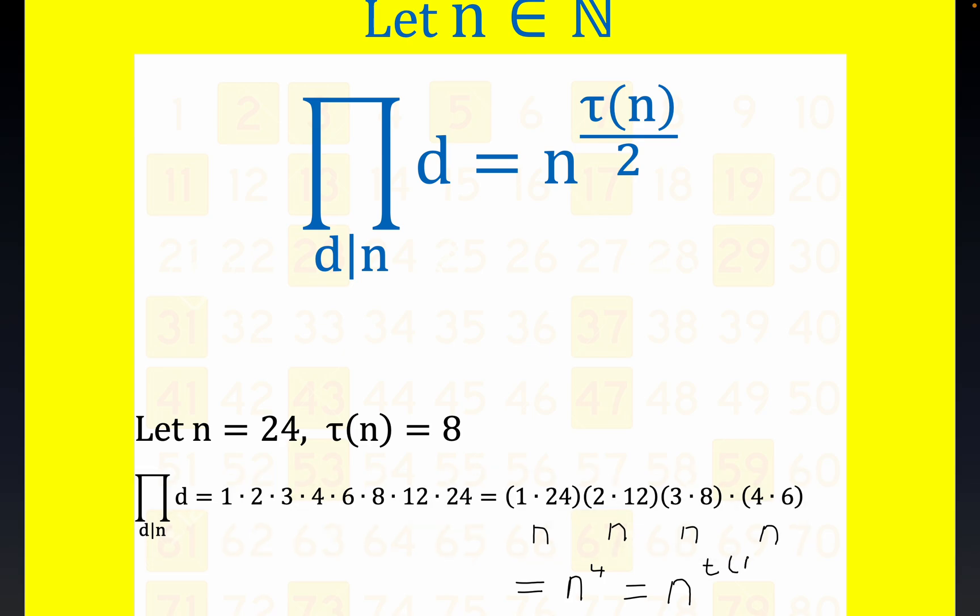So for non-perfect squares the result holds, right? This is what we're trying to prove: the product of the divisors is n raised to the tau of n divided by 2.